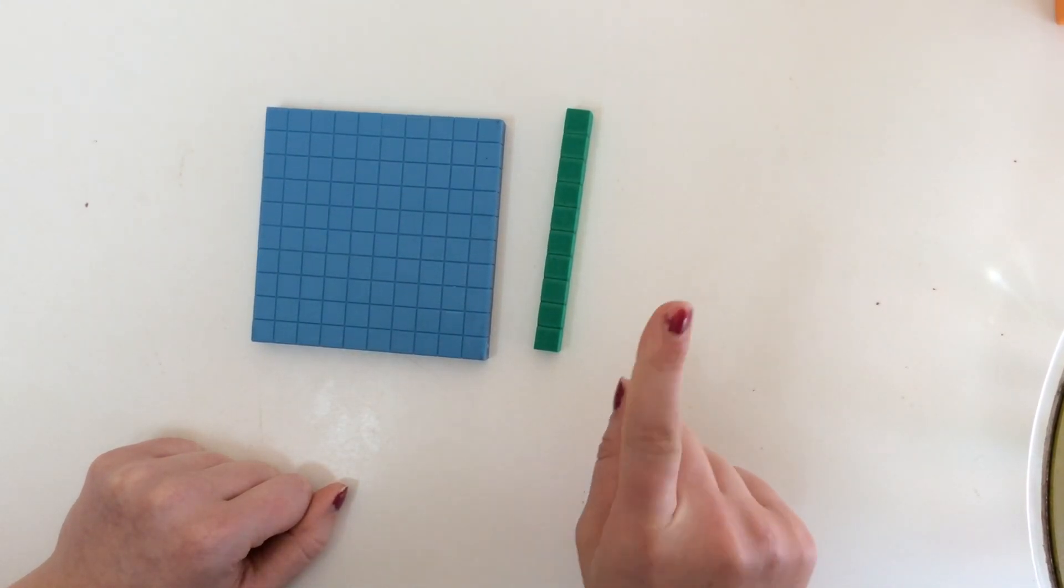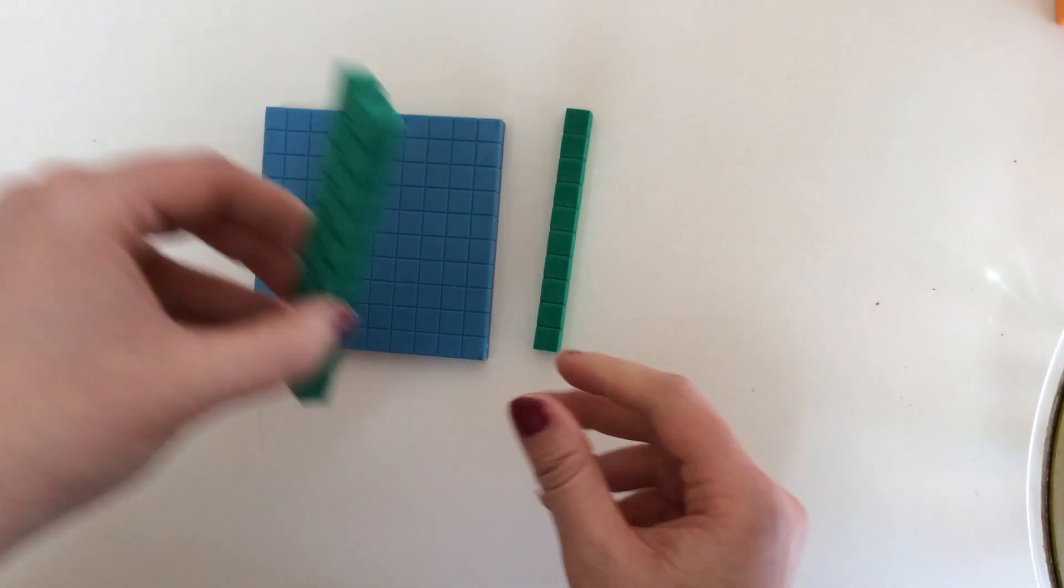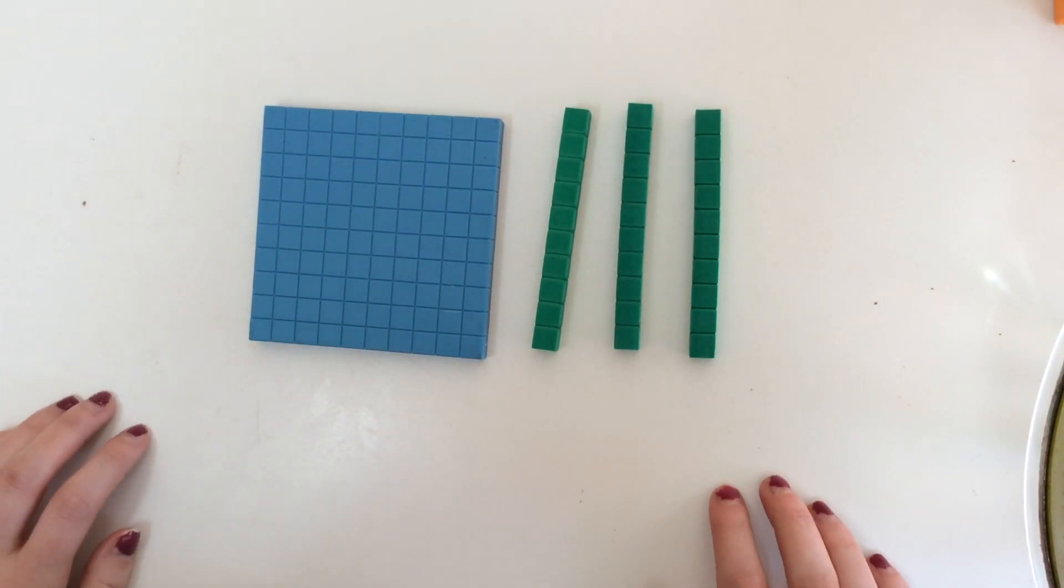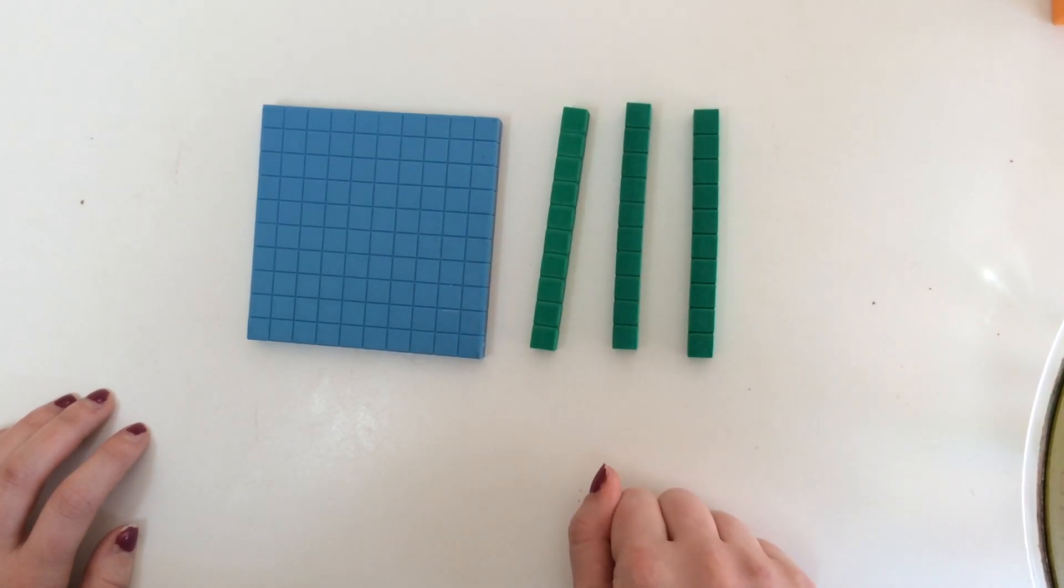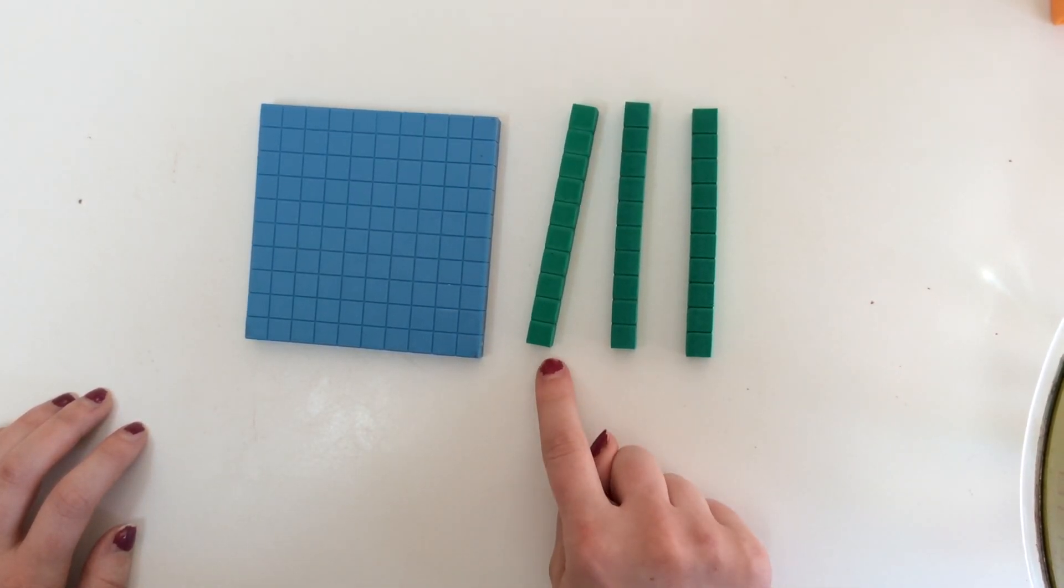Alright, but what if I add two more 10 sticks? How many do I have now? Let's see. How many 10 sticks do we have here? We have three 10 sticks, and we know that each 10 stick is 10, right? So we can count by 10s here.